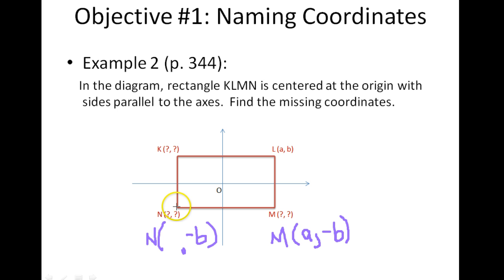And it's also equidistant from the y-axis as M is. However, it lies on the left-hand side of the x-axis. So rather than a positive, we have a negative A. So the coordinates for N are negative A and negative B.